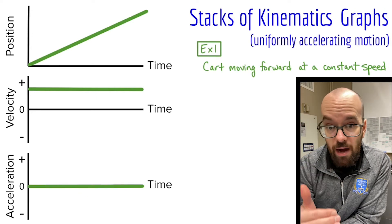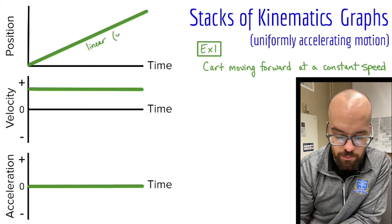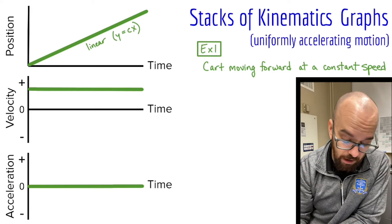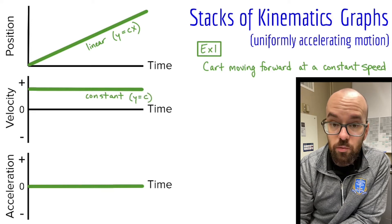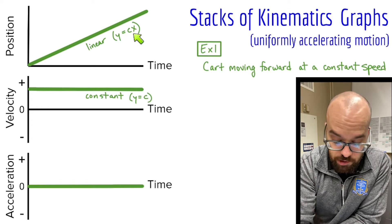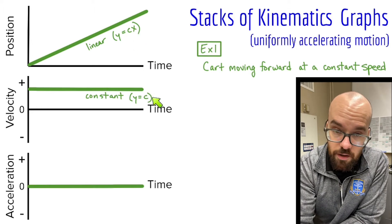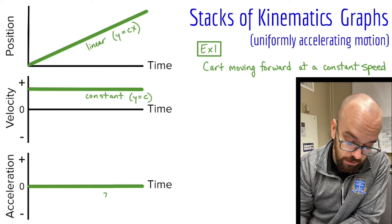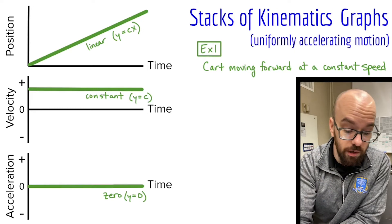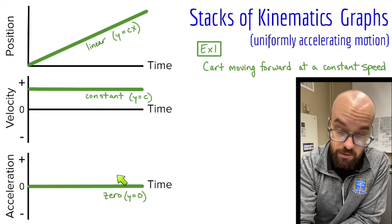Now let's talk about acceleration. Acceleration is the rate of change of velocity — how quickly you're getting faster or slowing down. In this case, we're staying at a constant speed, so our acceleration is zero. We shade in the zero axis for the acceleration graph. Notice the pattern: our position graph was linear (y = mx + b), our velocity graph was constant, and our acceleration was zero. If you have a linear position graph, the next graph down is constant, and the one after that is zero.